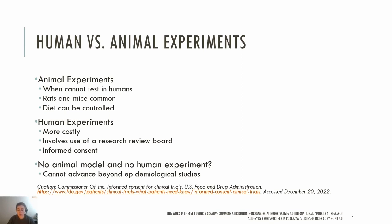The research review board only approves studies that have a valid experimental protocol, are expected to produce important knowledge, and treat study participants fairly and ethically. They also assess the potential treatment risks and benefits to the participants. Researchers must also obtain informed consent from the participants, which includes information about the study's purpose, procedures, known risks, and benefits. It is voluntary documented confirmation.